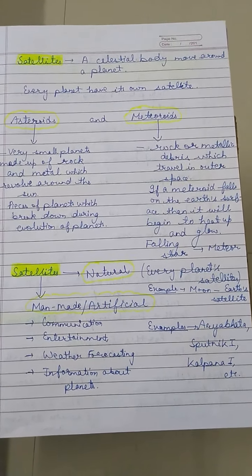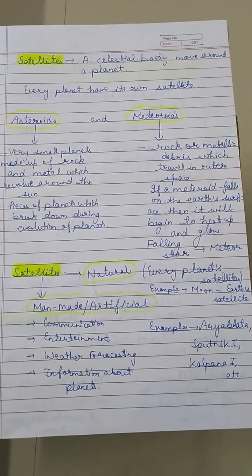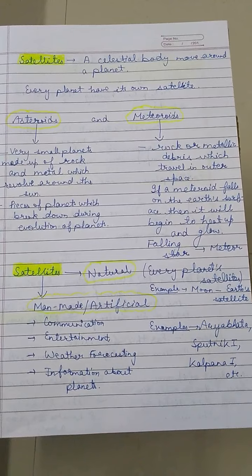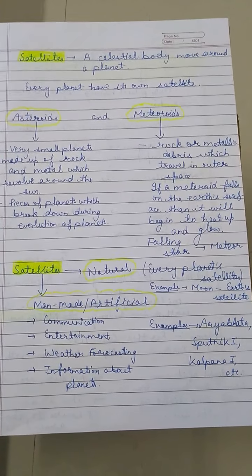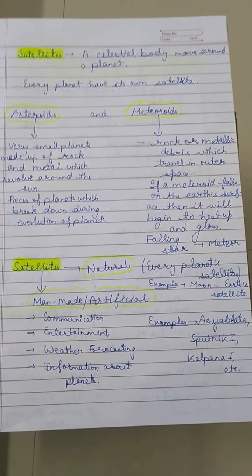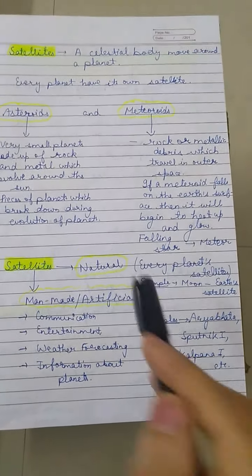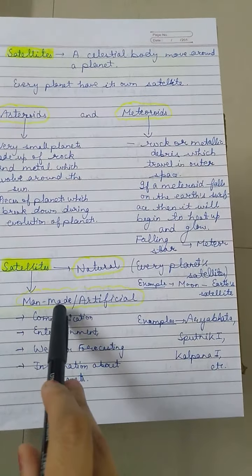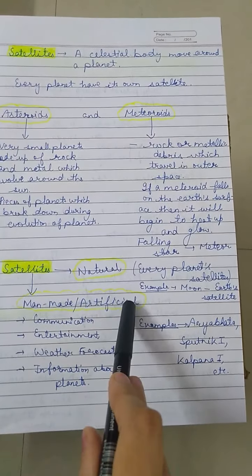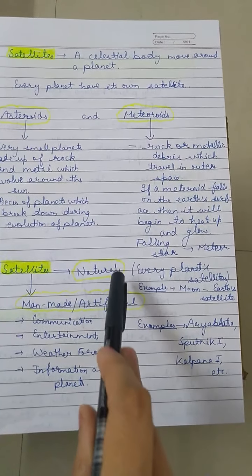Here I have also mentioned the classification of satellites. Satellites are divided into two main categories: natural and man-made or artificial satellites.